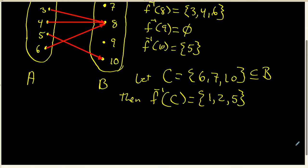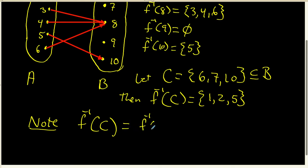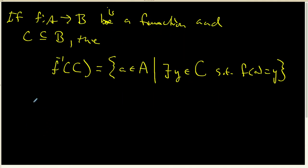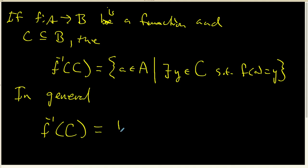There is something to note here that generalizes. In this particular example, the pre-image of C turned out to be the pre-image of 6 unioned with the pre-image of 7 unioned with the pre-image of 10. That actually works in general: the inverse of a whole set is just the union over all members y of that set of f-inverse of y. This is something you often encounter in set theory type classes.